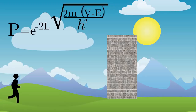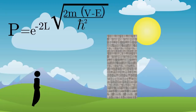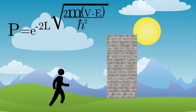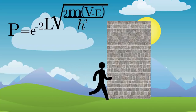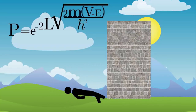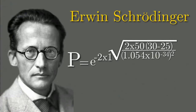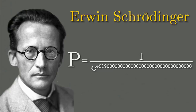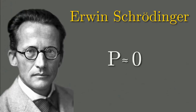But why can't we go through walls like an electron? It turns out that the greater your mass, the thickness and height of the wall, the smaller is the chance of tunneling through. Hence, Erwin Schrödinger showed that for an average person, this probability is so absurdly small that it is effectively zero. That is why you can't travel through walls.